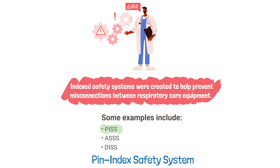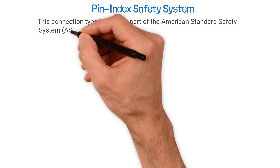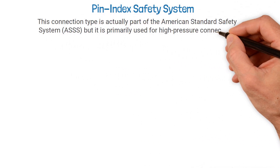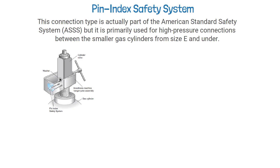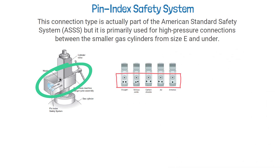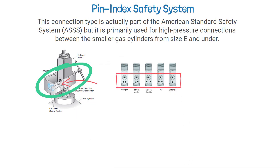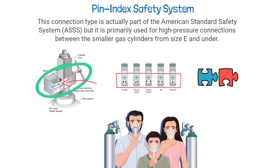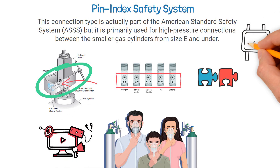PISS stands for the Pin Index Safety System. This connection type is actually part of the American Standard Safety System, but it is primarily used for high-pressure connections between the smaller gas cylinders — size E and under — and their attachments. The PISS system uses a yoke-type connection that utilizes different pin positions for each of the different types of gases. The pins and holes must align perfectly in order to secure a connection for gas delivery, making misconnections very difficult so that the incorrect gas is not delivered to the wrong patient.